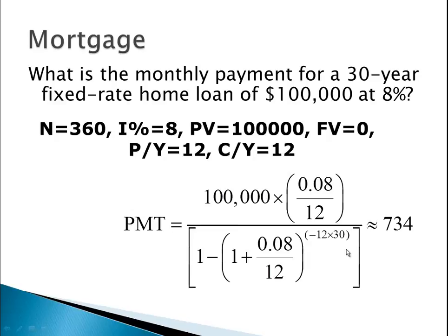Our negative power here because the balance is decreasing. We end up with a payment of $734 per month. That's how we do our calculations for mortgages. If you're using the calculator, you just go ahead and input this data, move the cursor on top of payments, and hit alpha solve. You will end up with a negative $734.